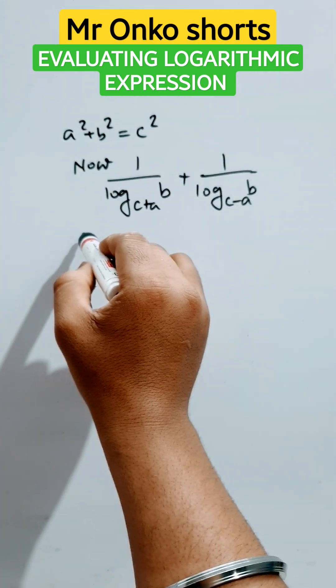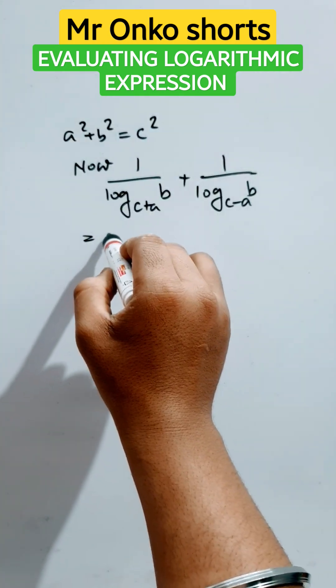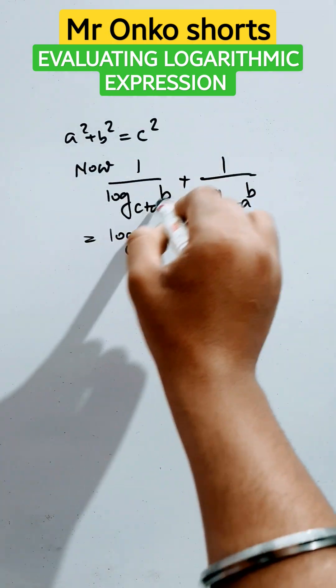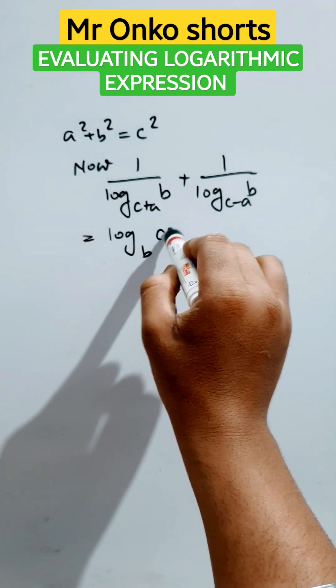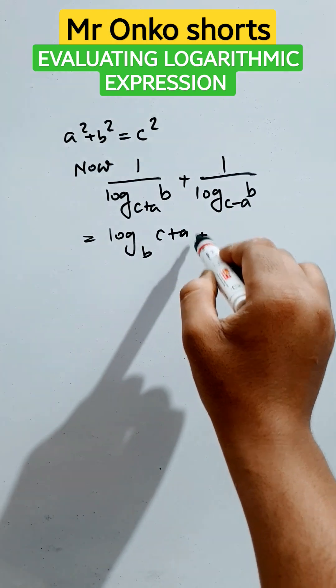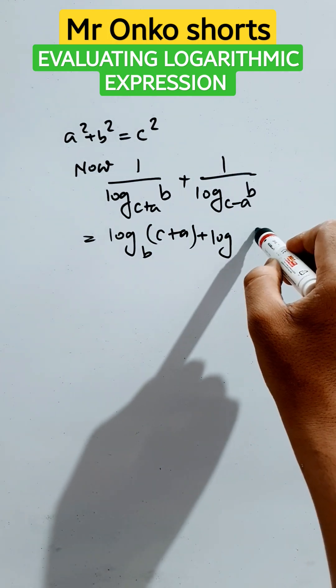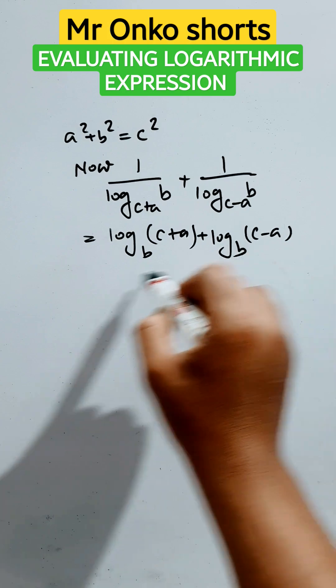Now let's see how to solve this. According to the properties of logarithm, we have to write this expression as logarithm of c plus a to the base b plus logarithm of c minus a to the base b.